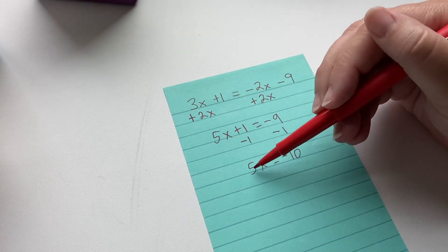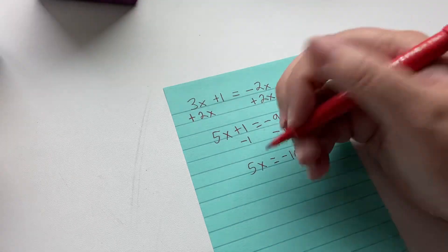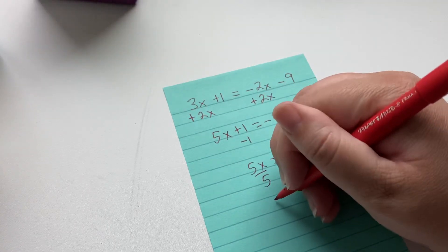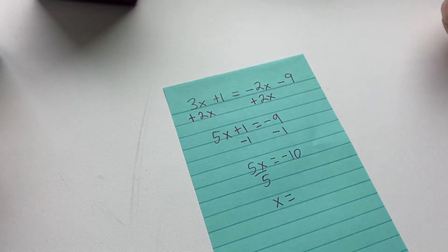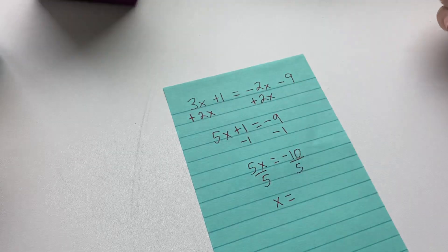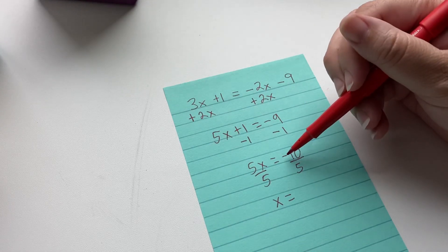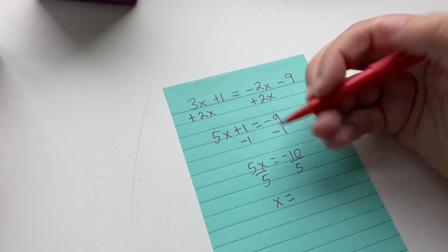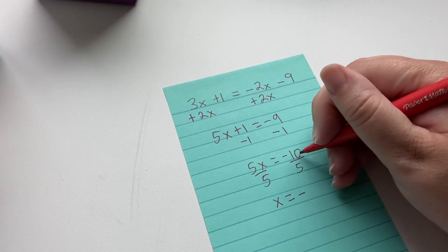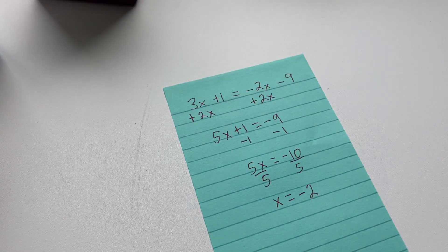Our last operation left here is this 5 times x. We do the inverse of multiplying, which is dividing, and we're left with x, which is what we're trying to do. And then we have to divide the other side by the same number. A negative divided by a positive will be a negative. So 10 divided by 5 is 2. x equals negative 2.